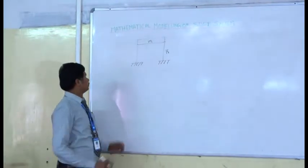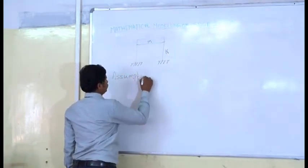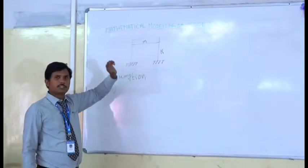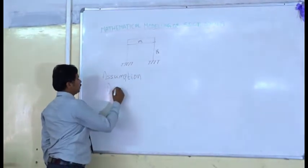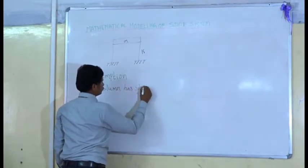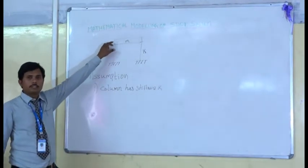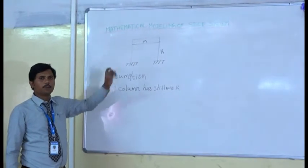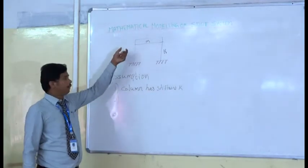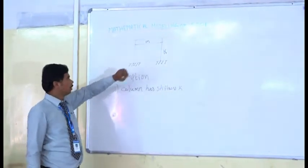We assume that the column has stiffness. Because the column is slender, it has the property of stiffness. The column has only a very less amount of mass. So, the mass of the column is ignored.